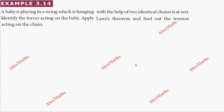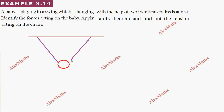Hi students, this is Alex here. Example 14: a baby is playing in a swing which is hanging with the help of two identical chains and is at rest. The first part of the problem: identify the forces acting on the baby, and apply Lami's theorem to find out the tension acting on the chain.